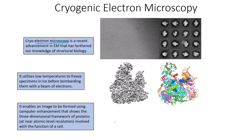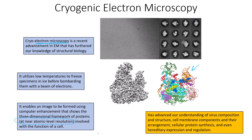Cryogenic EM enables an image to be formed using computer enhancements that shows the three-dimensional framework of proteins at near-atomic resolution. Because we are just freezing the molecule as is, we can really get at the detail — the three-dimensional conformation of a protein can be seen at near-atomic levels, which helps us understand cell function. This technique has advanced our understanding of virus composition and structure, cell membrane components and their arrangement, cellular protein synthesis, and sometimes hereditary expression and regulation, since most of that is the result of particular proteins.